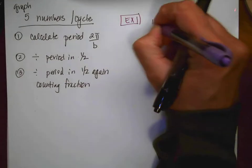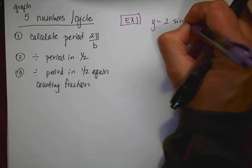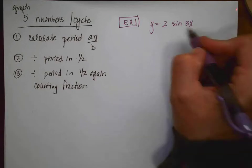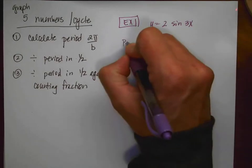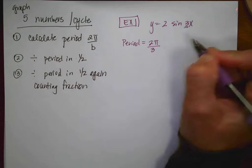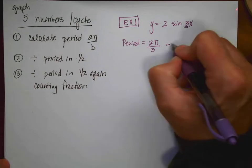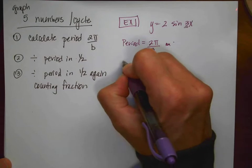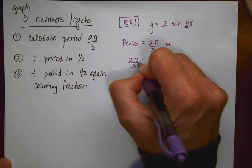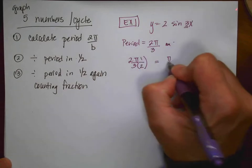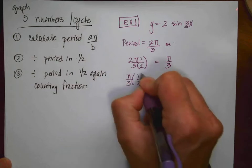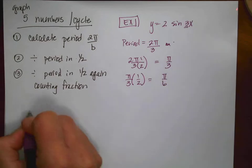Example 1: graph y = 2·sin(3x). The first thing I'll do is figure out my period: 2π divided by b, which is 3, so the period is 2π/3. Then I divide that in half: 2π/3 ÷ 2 = π/3. Dividing in half again gives π/6, which is my counting fraction.